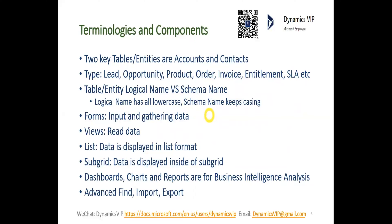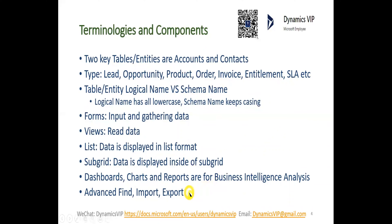Forms are mainly used for input and gathering data — for example, entering a customer's name and addresses to collect data. Views are for reading data. List is for displaying data in a list format. Subgrid is for displaying data inside a subgrid — for example, there could be 10 rows in the subgrid and you can have an overview of those 10 rows immediately. Dashboards, charts, and reports are for business intelligence analysis. If we need to do a search, we can use Advanced Find.